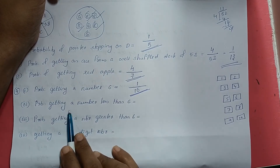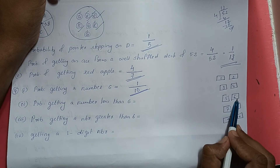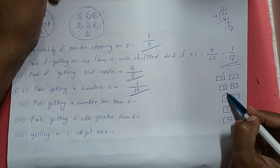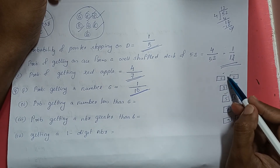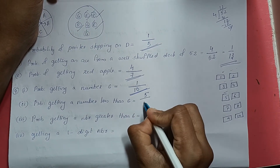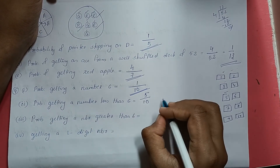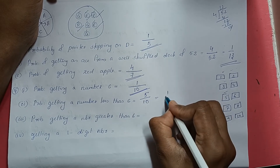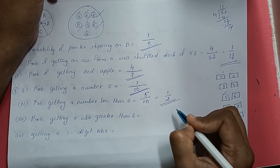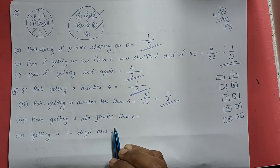Next, probability of getting a number less than 6. Numbers less than 6 are 1, 2, 3, 4, and 5 — that is 5 numbers — divided by total which is 10. Five by ten simplifies: 5 twos are 10, so the probability is 1 by 2.